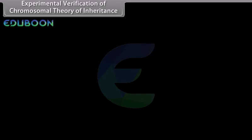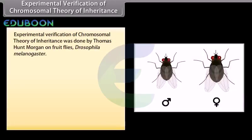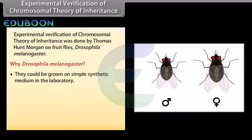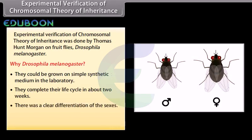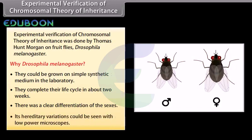Experimental verification of the chromosomal theory of inheritance was done by Thomas Hunt Morgan on fruit flies, that is Drosophila melanogaster. Drosophila was chosen because they could be grown on simple synthetic medium in the laboratory, they complete their life cycle in about 2 weeks, there was clear differentiation of the sexes, and their hereditary variation could be seen with low-power microscopes.